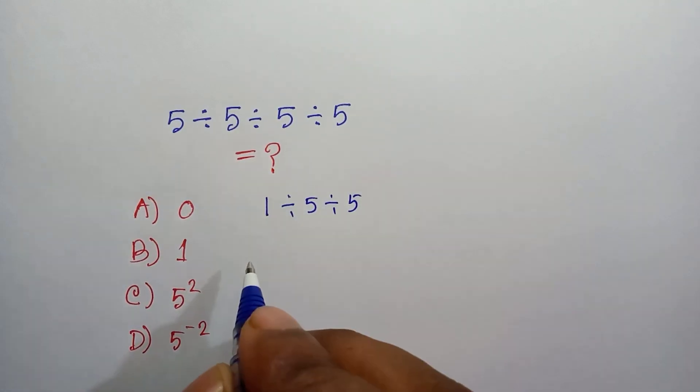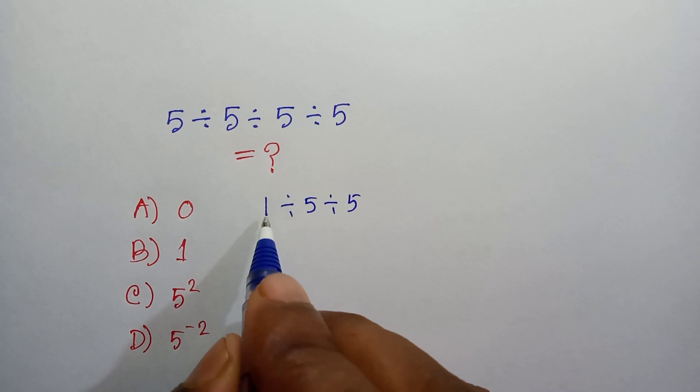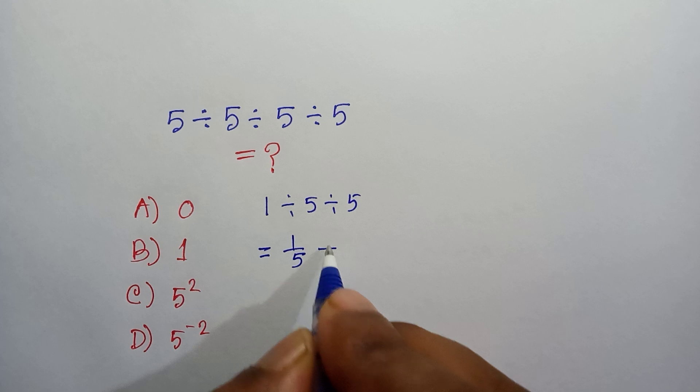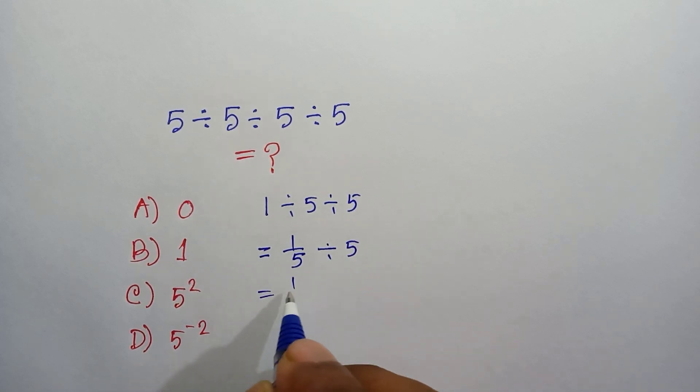And now 1 divided by 5, which is one over 5, divided by 5. And now one divided by 5.